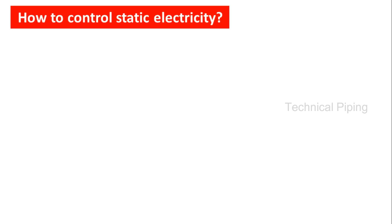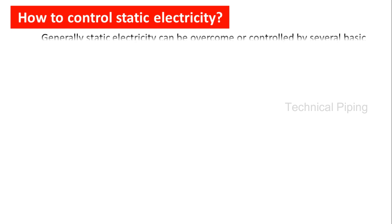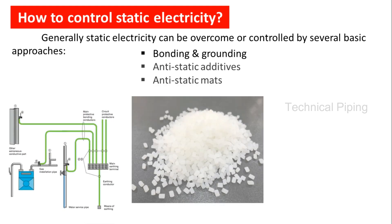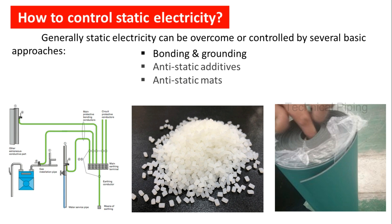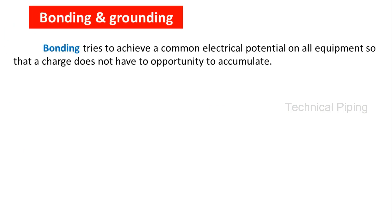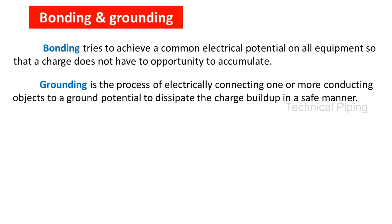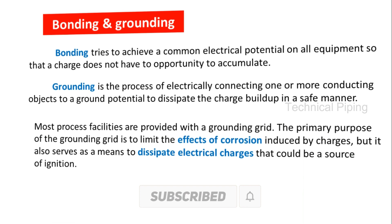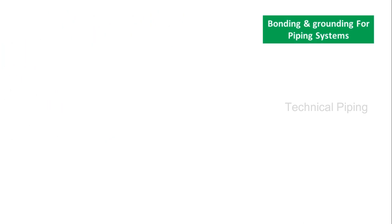Static electricity is a major cause of fires and explosions in many industries. So how to control static electricity? Generally, static electricity can be overcome or controlled by several basic approaches: bonding and grounding, adding anti-static additives, and providing anti-static measures. Here is shown how bonding and grounding is installed in a piping system above the pipe racks in process plants.